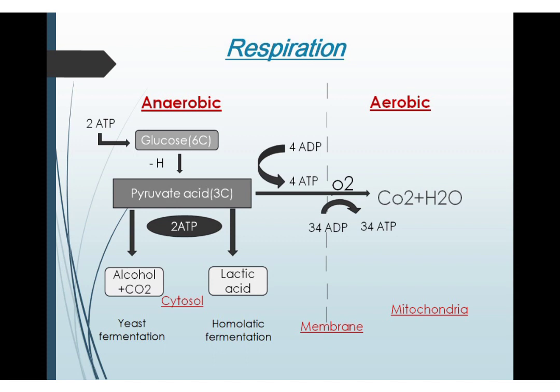Remember, pyruvate is the end product of glycolysis. The start of respiration requires two ATP and a glucose molecule. At the end, glycolysis produces four ATP from four ADPs, with the net result of two ATP being produced.